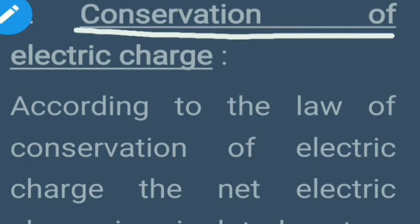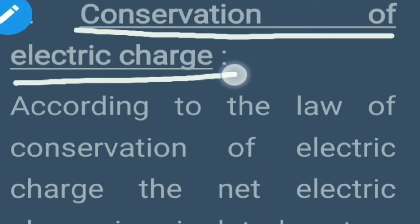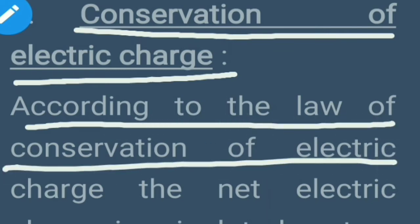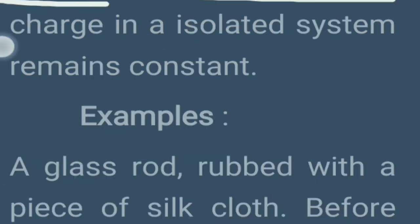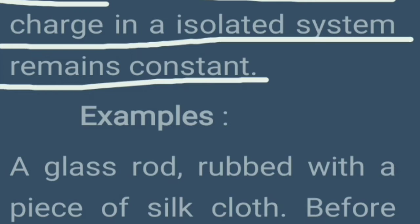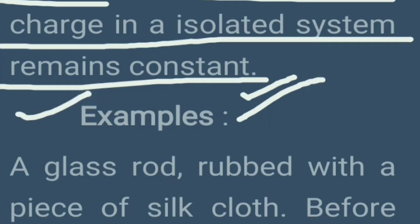Second is conservation of electric charge. According to the law of conservation of electric charge, the net electric charge in an isolated system remains constant. Isolated system में जो net charge है वो constant बना रहेगा। इसको एक example के द्वारा देखते हैं — suppose आपके पास एक glass rod है।